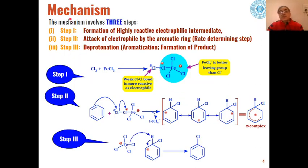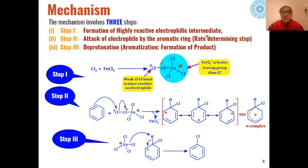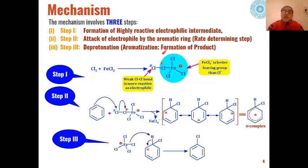The mechanism of this reaction can be divided into three steps. The first step, as seen in nitration and sulfonation, is the formation of a highly reactive electrophilic intermediate. In the second step, that electrophilic intermediate attacks the aromatic system — this is the slow, rate-determining step. In the final step, deprotonation of the intermediate formed in the second step takes place, and the product is obtained through re-aromatization.